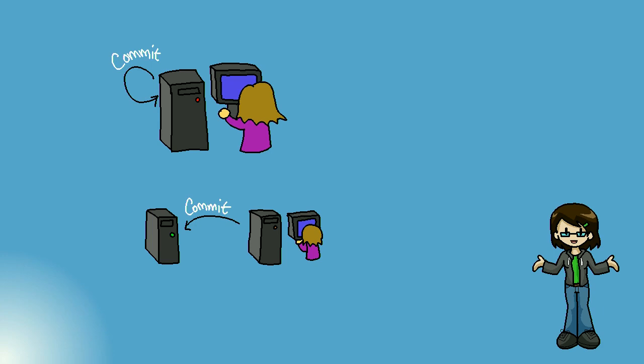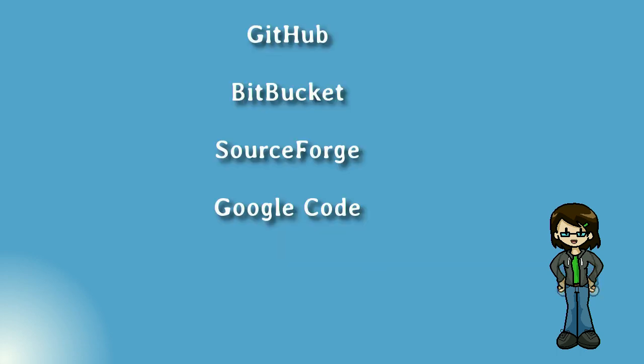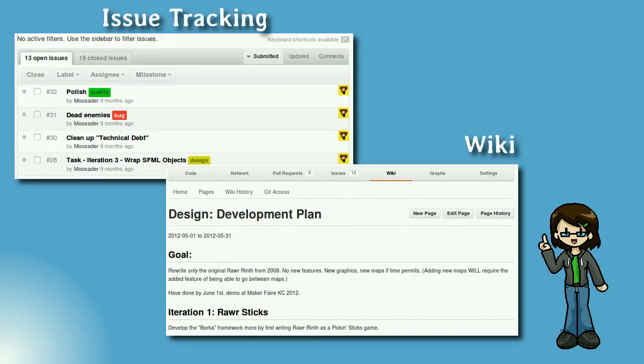You can set up a repository for Git, Mercurial, or anything else on your local machine and use it that way, or on a server computer on your network. I prefer to use websites that will host my projects for me since it's available online and I trust a company's servers more than my own. There are a lot of places out there who will host your projects for free, provided that the project is open source. These websites are GitHub, Bitbucket, SourceForge, and Google Code. These sites also provide handy issue tracking where you can keep track of bugs or just make a list of to-do features for your project. They also give you a wiki so you can add documentation for your project online.